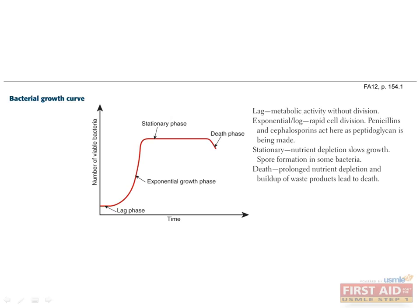In order to grow, bacteria require the following minimum energy sources: carbon, nitrogen, water, and various ions. When these conditions have been met, bacteria must then build structures, membranes, and proteins by synthesizing amino acids, carbohydrates, and lipids. A cascade of regulatory events then initiates DNA synthesis.